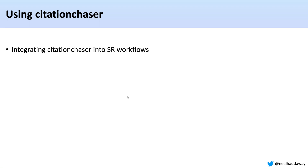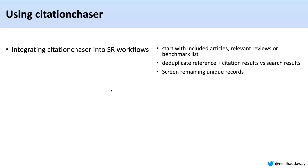You can integrate Citation Chaser into your workflows by starting with your included articles, relevant reviews, or benchmark list. You can then deduplicate the results of your citation chasing by adding it to your search results and removing duplicates — what you get is anything missed by your search results but found by citation chasing. So you don't have to go through all citation chasing results; you can remove duplicates already screened as part of your bibliographic search, and just look at those unique records that were missed by the bibliographic searching.